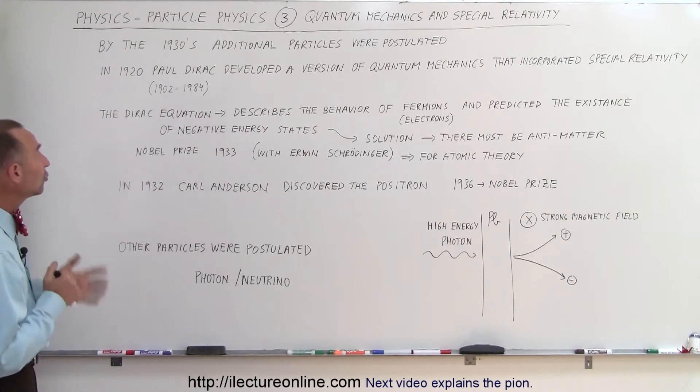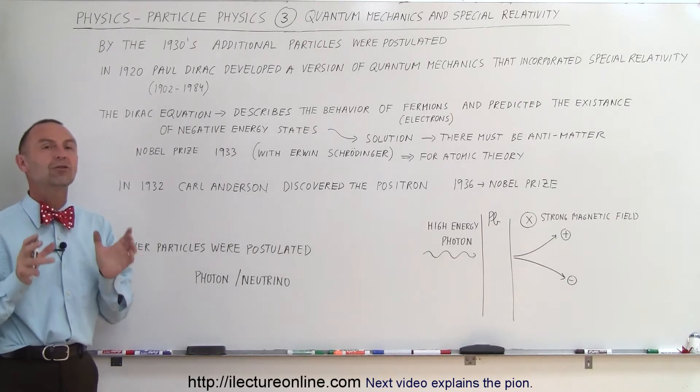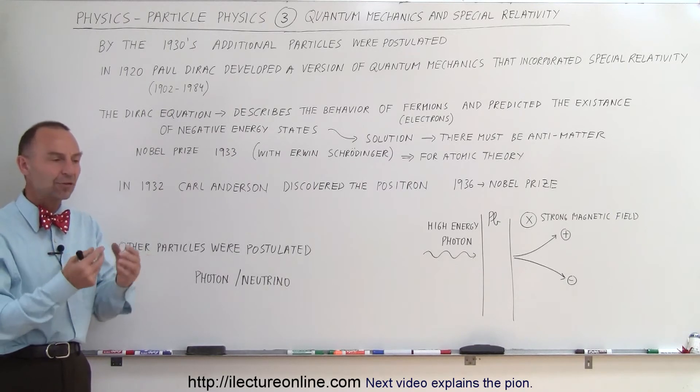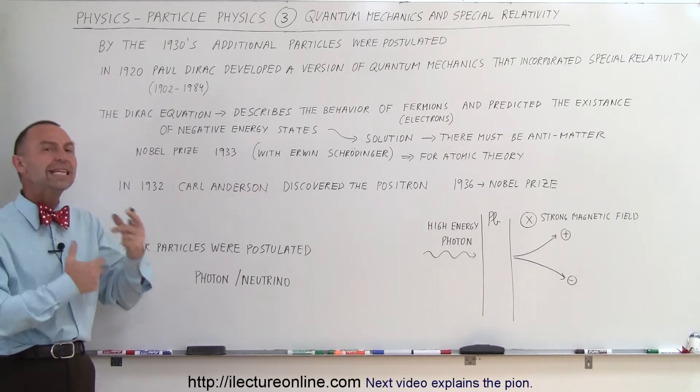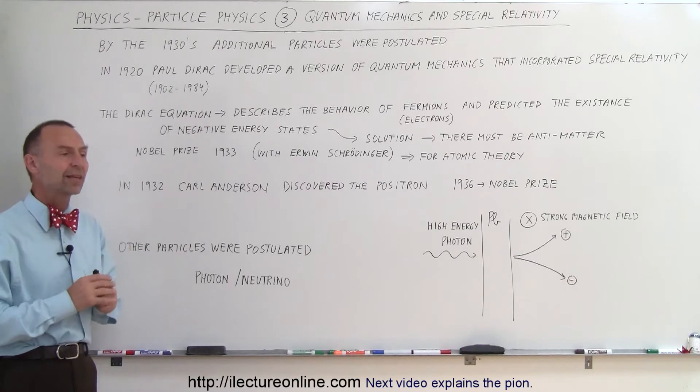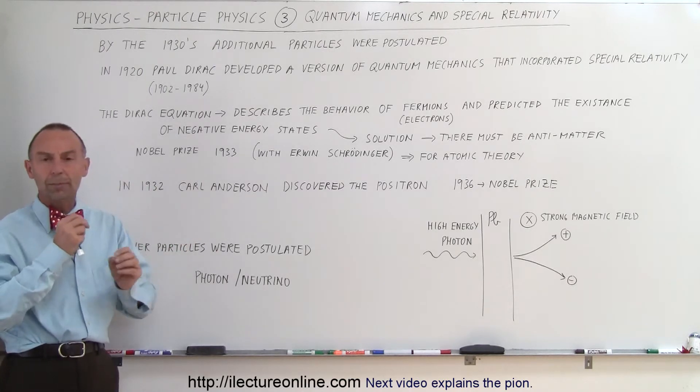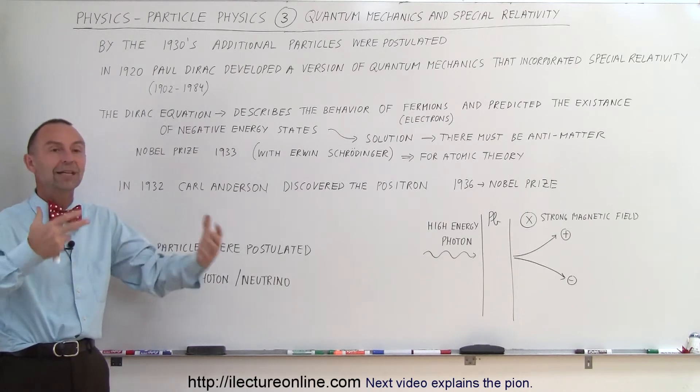For example, in 1920 Paul Dirac developed a version of quantum mechanics incorporating special relativity. Quantum mechanics is the study of the mechanical behavior of small particles. Because they're so small there's a very unique behavior, so a new field of study in physics called quantum mechanics came about. When he took that quantum mechanics, the way small particles behave, which is very different from large particles like everyday life that we experience.